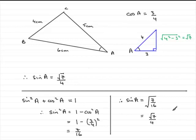So, either way, I much prefer this way though, I must admit. Either way, you should be able to come up with the exact value of sine A as root 7 over 4. Well that brings us to the end of this question.